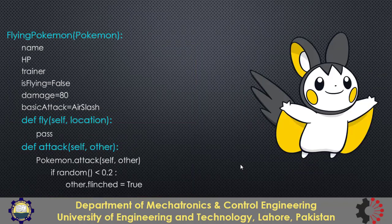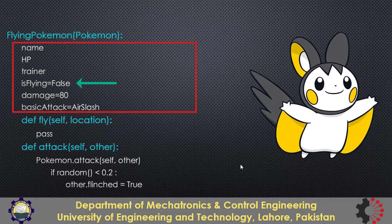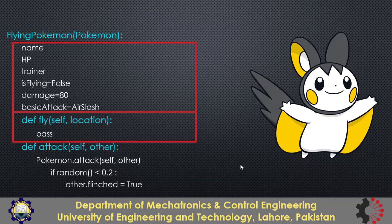Then there can be a flying Pokemon, and again it will have attributes of the parent Pokemon class. One additional attribute is named 'isFlying' to indicate if it is flying or not. It will have its own method 'fly' which is not available in the parent Pokemon class. The attack method is overridden in a way that when it attacks it may flinch the other Pokemon.